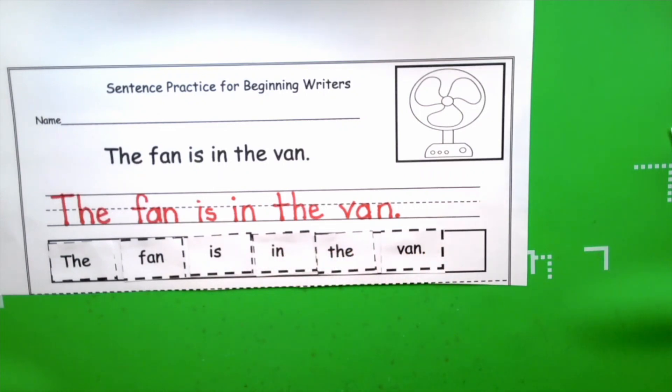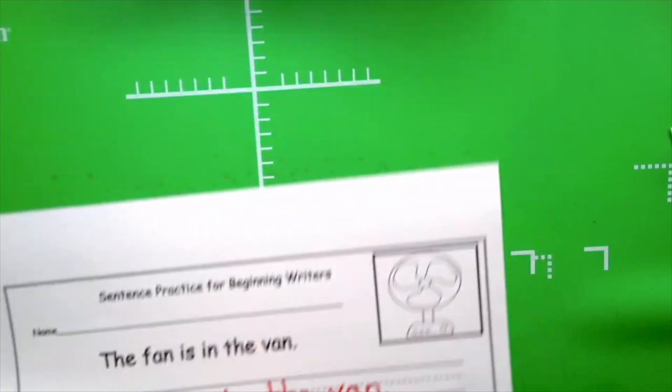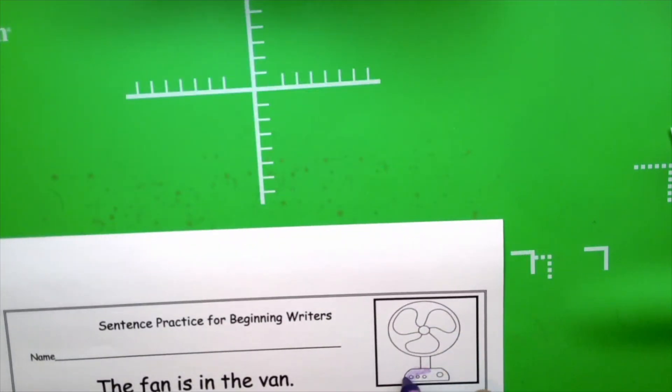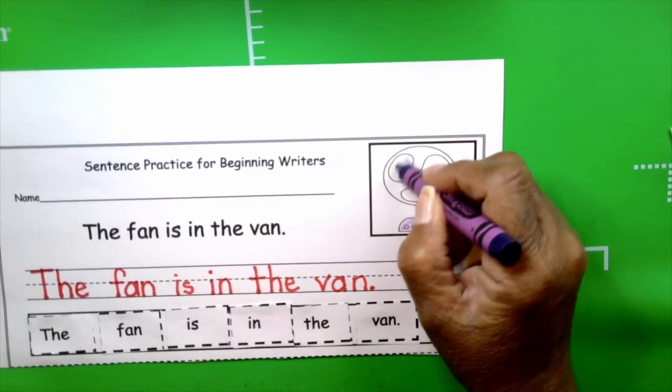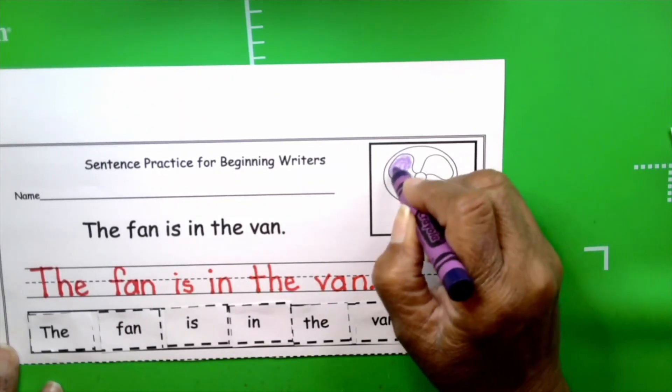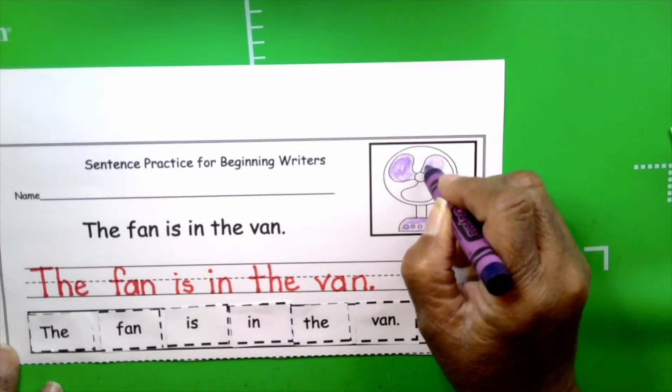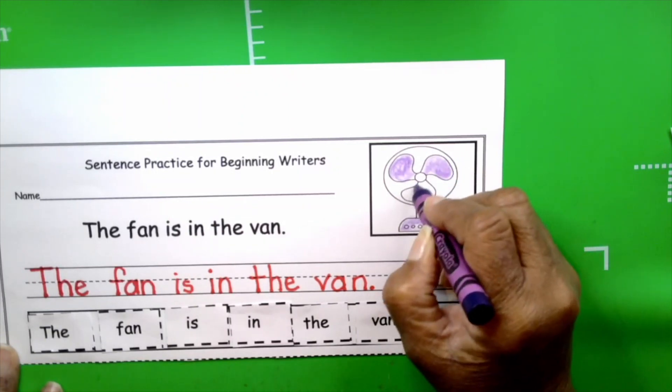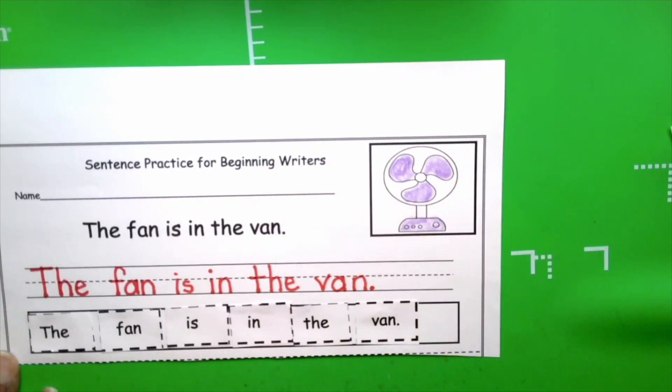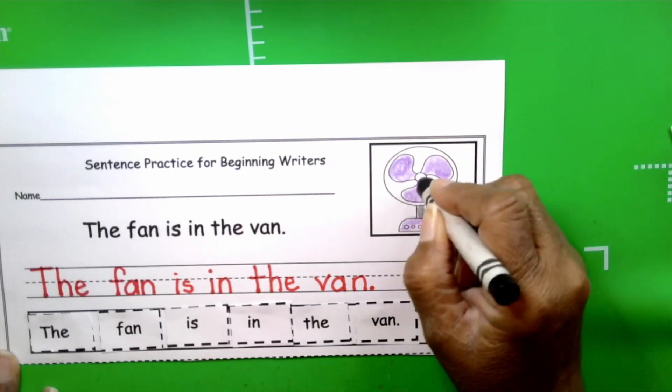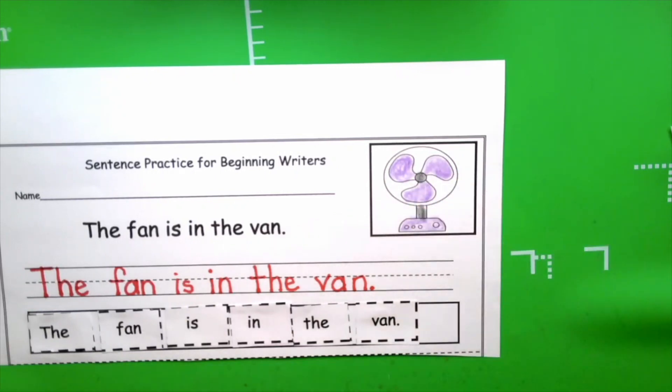Boys and girls, now it's time for our favorite part of the activity. Time to color the fan. And this is your fan. So you can color your fan any color you want. These are the blades of the fan. And this is what goes round and round, spins round and round, and shoots out all that air. That's it for the fan.